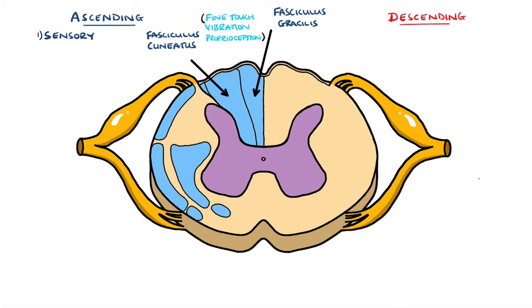Fasciculus gracilis lies medially to fasciculus cuneatus, and the difference between the pathways is that signals from the lower limb generally below T6 travel in the fasciculus gracilis, while signals from the upper limb, generally T6 and above, travel in the fasciculus cuneatus.